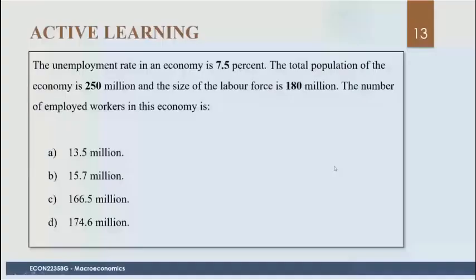Here's a practice question: we're told the unemployment rate is 7.5%, given the total population and the labor force, and asked to find the number of employed workers. We know the labor force consists of those employed and those unemployed. We can calculate how many are unemployed by multiplying 0.075 times the labor force to get the number unemployed. Then we take the difference from the labor force to get the number employed. The correct answer is C.